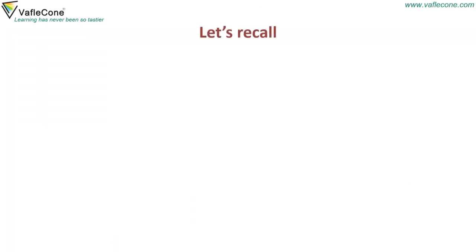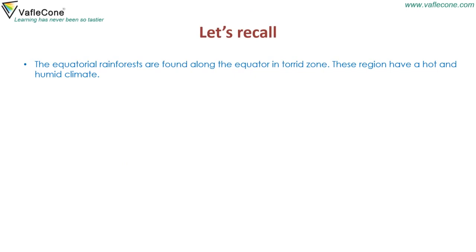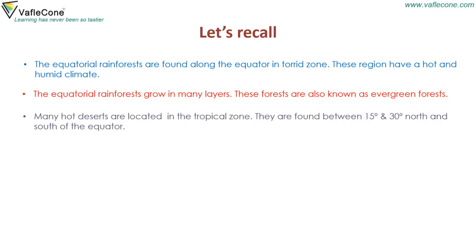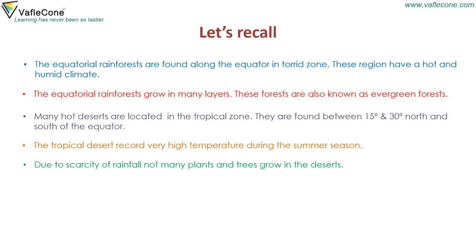Now let's recall. The equatorial rainforests are found along the equator in the torrid zone. These regions have a hot and humid climate. The equatorial rainforests grow in many layers and are also known as evergreen forests. Many hot deserts are located in the tropical zone, found between 15 degree and 30 degree north and south of the equator. The tropical deserts record very high temperatures during summer. Due to scarcity of rainfall, not many plants and trees grow in the deserts.